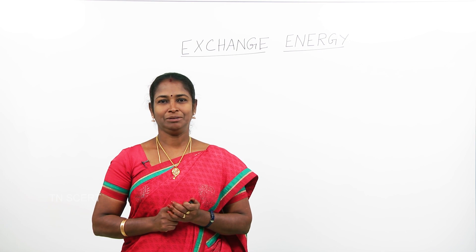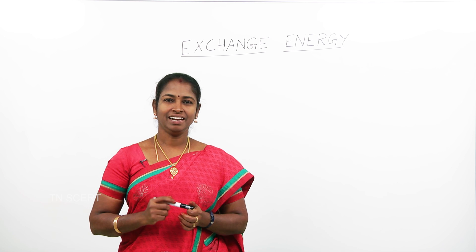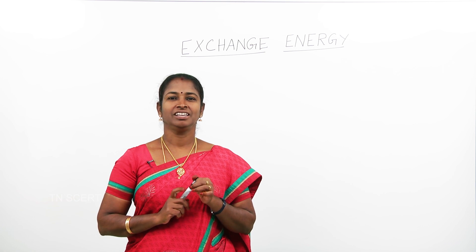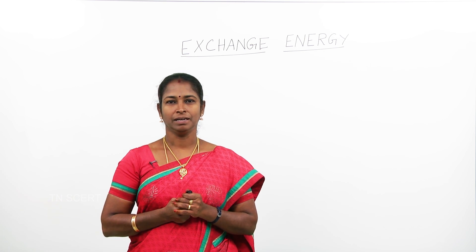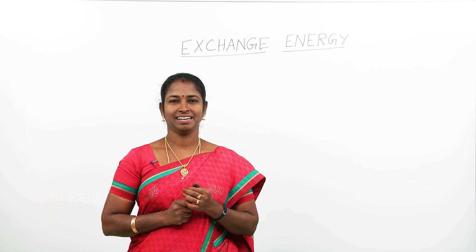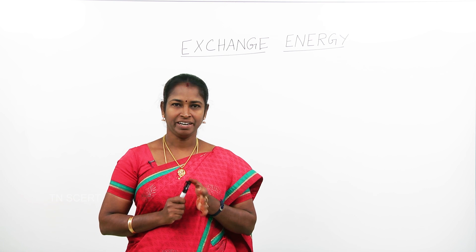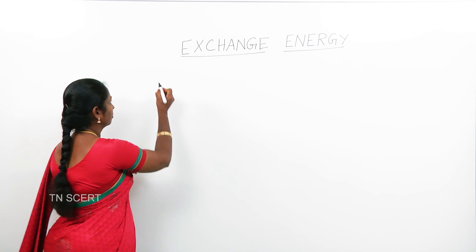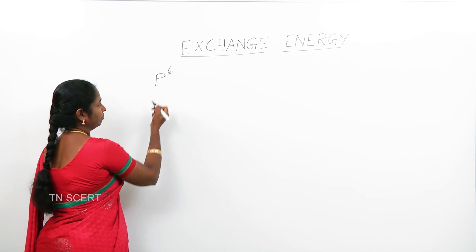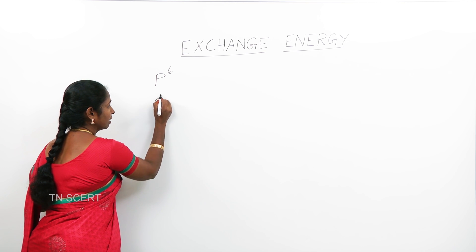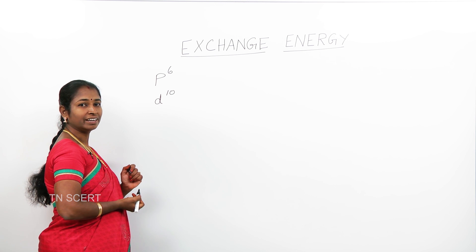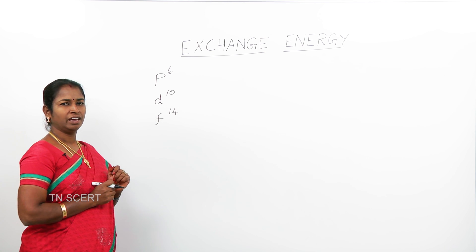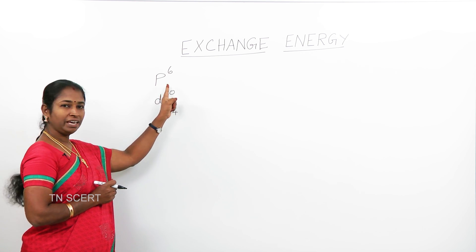You studied quantum numbers. This clearly explains what are the maximum number of electrons that can be accommodated in each subshell. For example, p orbitals can accommodate 6 electrons, d orbitals can accommodate 10 electrons, and f orbitals can accommodate 14 electrons.